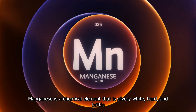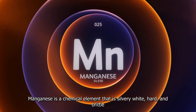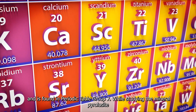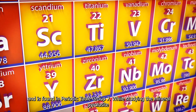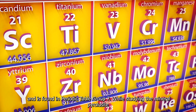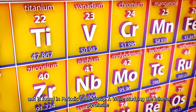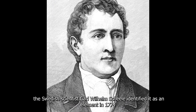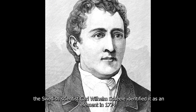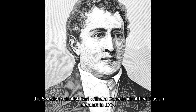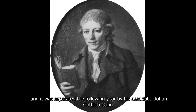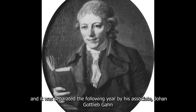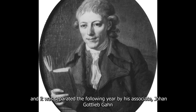Manganese is a chemical element that is silvery white, hard, and brittle, and is found in periodic table group 7. While studying the mineral pyrolusite, the Swedish scientist Carl Wilhelm Scheele identified it as an element in 1774, and it was separated the following year by his associate Johan Gottlieb Gahn.